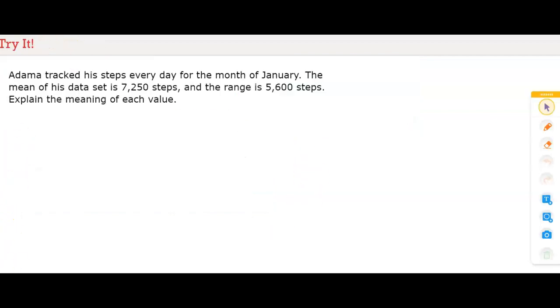Adama tracked his steps every day for the month of January. The mean of his data set is 7,250 steps, and the range is 5,600 steps. Explain the meaning of each value.